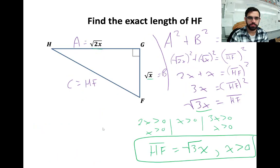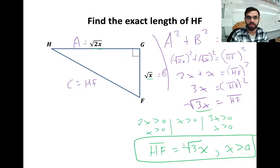Here's another one. This problem is pretty much the same as the last — we'll use the Pythagorean theorem to set up our equation, solve for the missing side, and check domain restrictions on all three sides. For all three sides, the domain restriction is the same: x must be greater than 0.